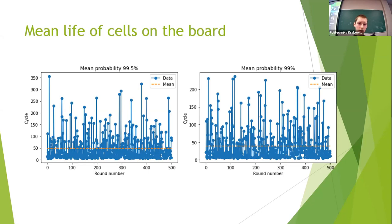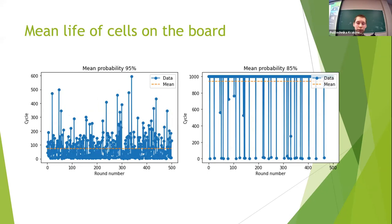We can see the means for the probabilities of 99.5% and 99% — this line and this one. We can observe higher values for the left plot, where the life expectancy was about 50 cycles, whereas for 99% probability it was 37 cycles. Below this probability the life expectancy of the population increases, and when it is low enough the population never dies. Therefore, I had to specify the maximum cycle at which the program must stop, and I set this limit at a cycle equal to 1000.